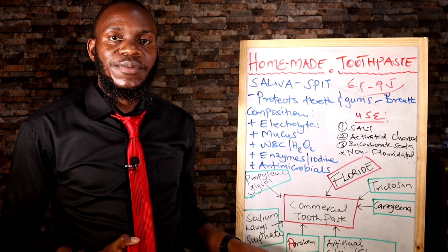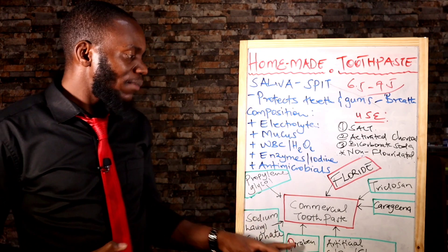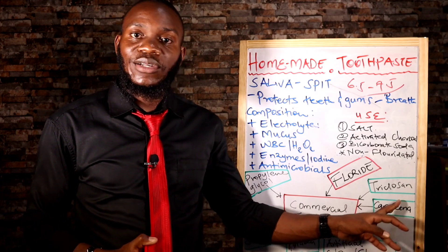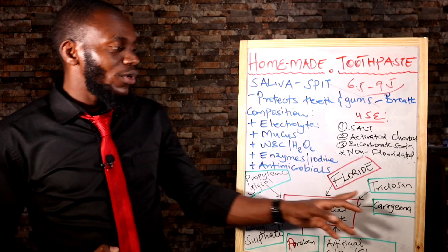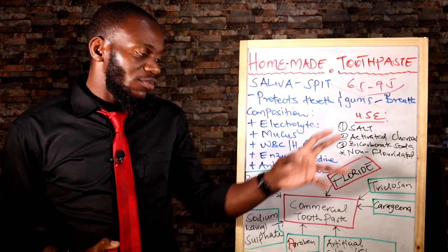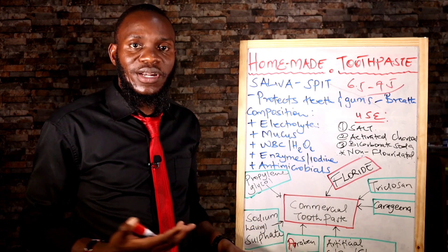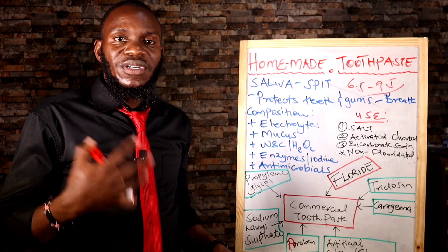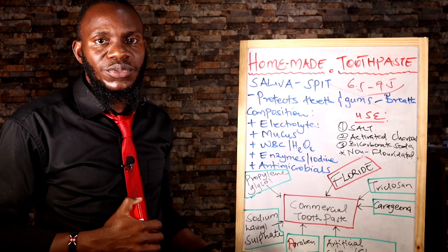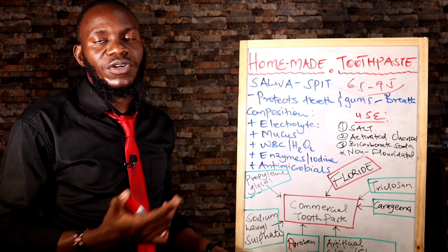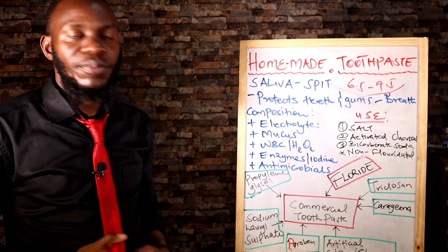Paraben is used as a preservative. Paraben and triclosan play similar roles — they are all endocrine disruptors. You can avoid them because you don't need to disrupt your hormones. That's a biological compromise for the sake of just whitening or cleaning your mouth. Avoid them totally. We don't want hormonal problems just because we've been using toothpaste for a long period of time.